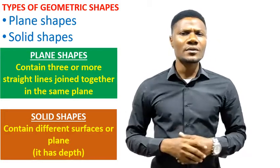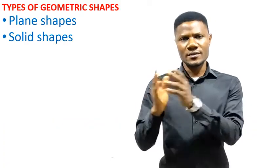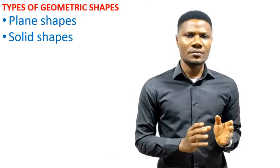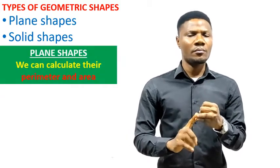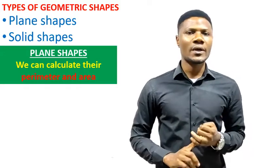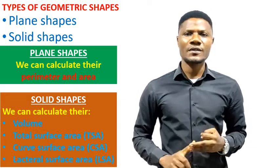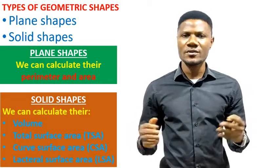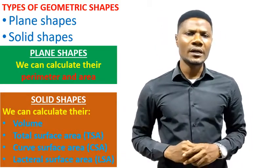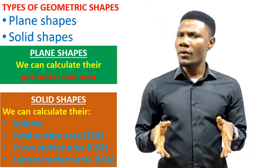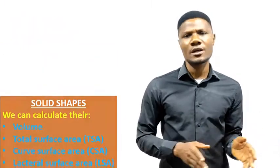Another important thing you need to understand about plain shapes and solid shapes is that for plain shapes we can calculate perimeters and area. But for solid shapes, what we calculate is volume, total surface area, curved surface area, or the lateral surface area. In this video, our main focus will be on plain shapes.